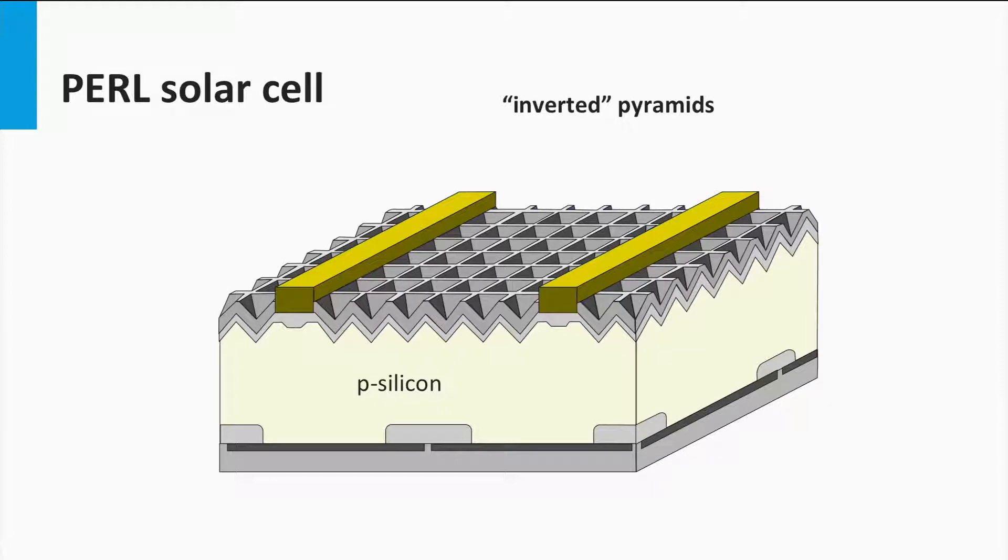Thirdly, the contact area at the front side has to be as small as possible to reduce the shading losses. In the PEARL concept, these very thin and fine metal fingers are processed using photolithography technology.